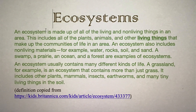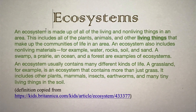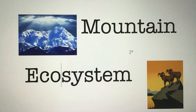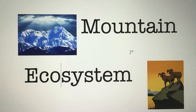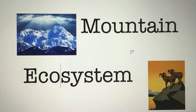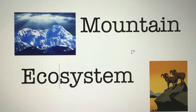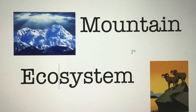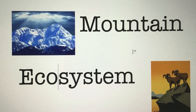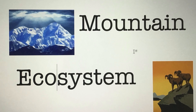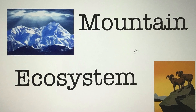It includes other plants, mammals, insects, earthworms, and many tiny living things in the soil. The second Wyoming ecosystem you will learn about is the mountain ecosystem. A mountain ecosystem is a piece of land that is very high and has steep sides. It is an unusual ecosystem because it contains many other ecosystems within it.